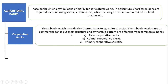But their structure and ownership pattern are different from commercial banks. Examples include State Cooperative Bank, Central Cooperative Bank, and Primary Cooperative Societies. These are all opened by cooperative societies.